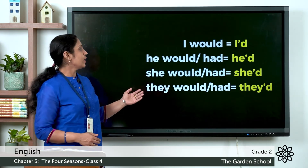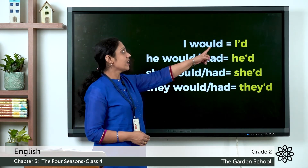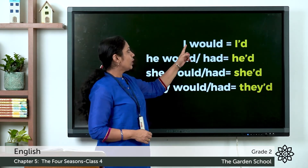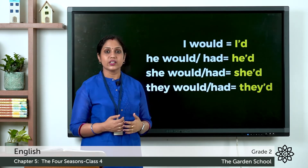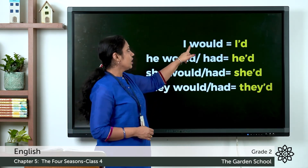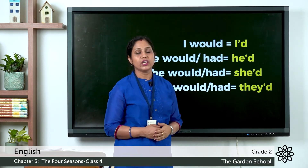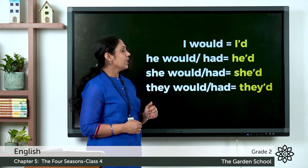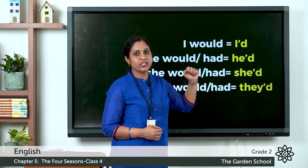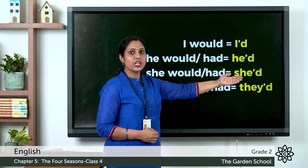I would is written as I'd — I apostrophe D — where W-O-U-L from 'would' are missing. He would or he had is written as he'd, and she would or she had is written as she'd.